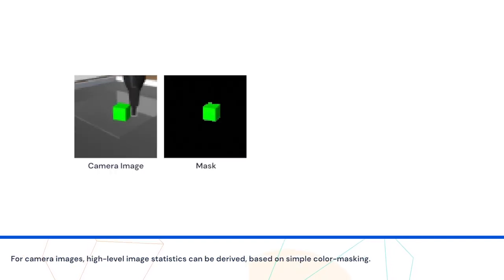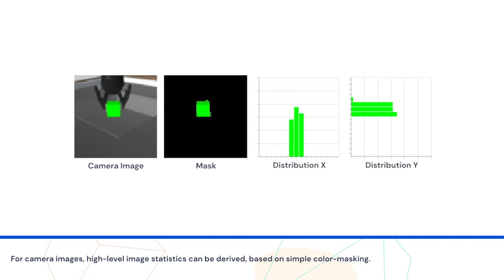For camera images, high-level image statistics can be derived based on simple color masking.